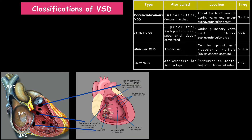First let us see the classification of the VSDs. In this picture we can see the sagittal section of the right side of the fetal heart, where you can see the SVC and IVC draining into the right atrium, followed by the tricuspid valve and the right ventricle. There are three parts in the right ventricle: the inlet, the apical part, and the outlet part. The right ventricle has more trabeculations compared to the left ventricle. This area is called the crista ventriculares, and it is a very important landmark in the right ventricle because it helps us classify the location of the VSDs.